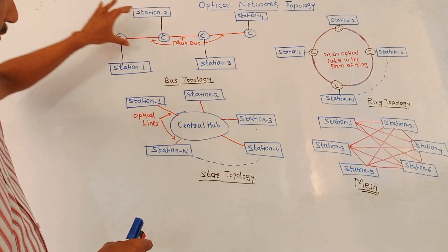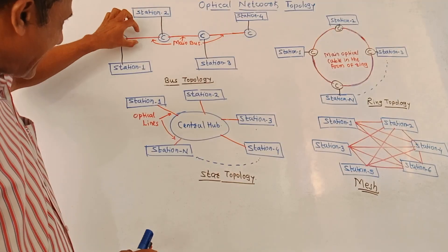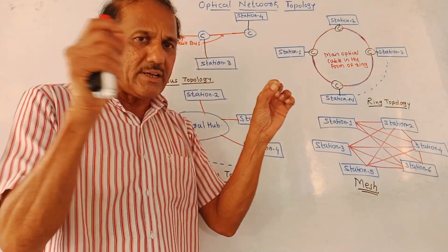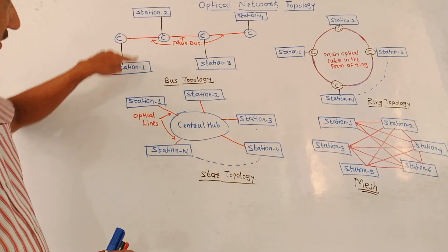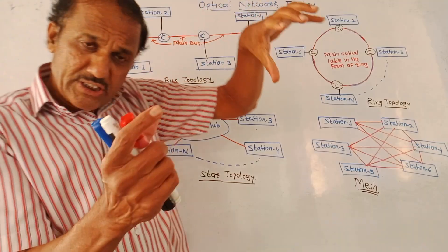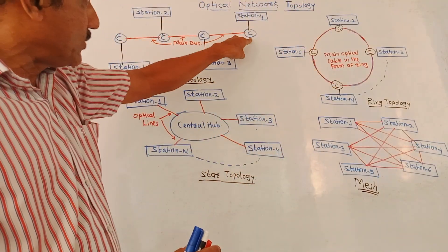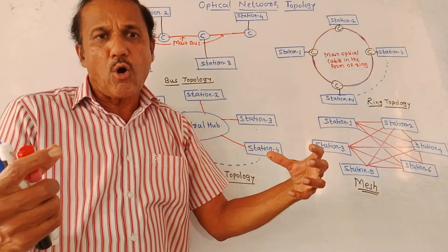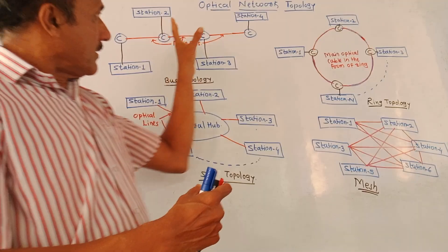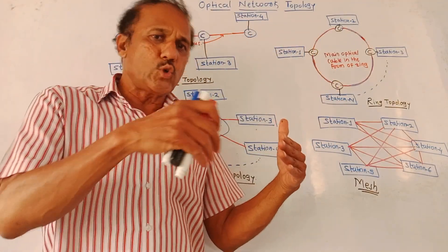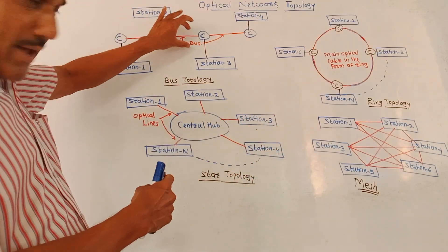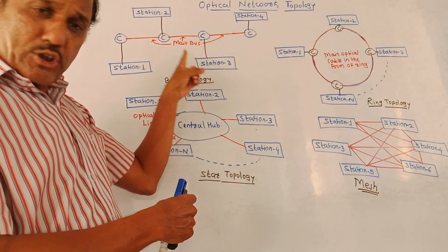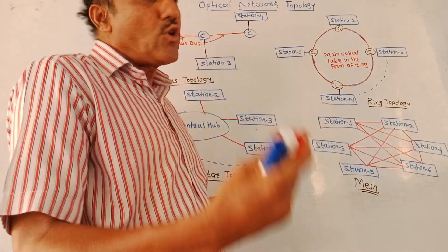The first type of topology is bus topology. The red line in the diagram indicates the main bus — the main optical link through which optical data is transmitted. Different stations (station 1, 2, 3, 4) are connected to the main fiber optic cable using C, which represents an optical coupler. Every station takes out a certain portion of optical power from this main bus. The advantage is it is simple to implement; the disadvantage is that if the main bus fails, the entire system fails. This topology is similar to normal LAN networks used in computer systems.